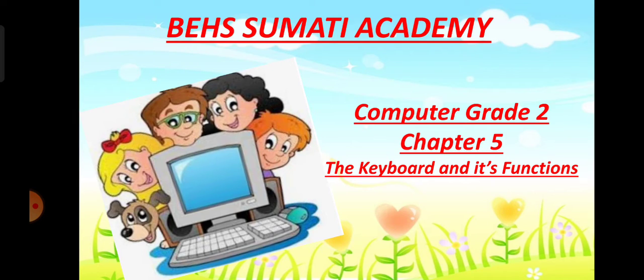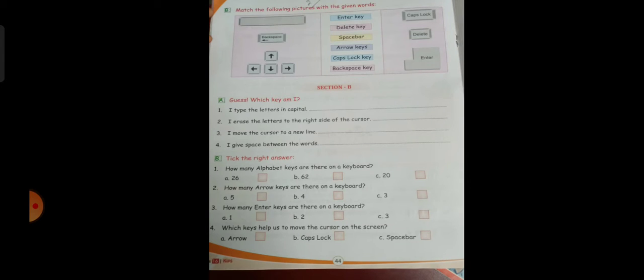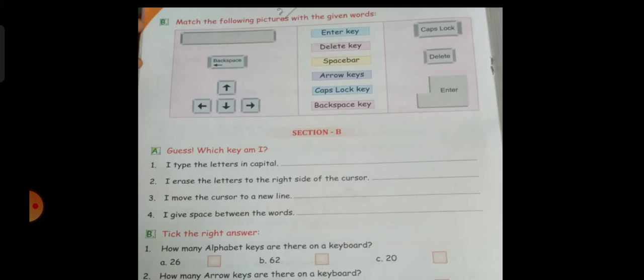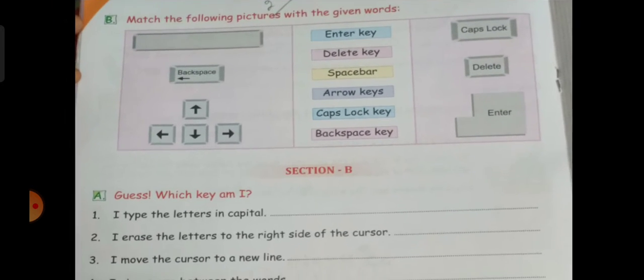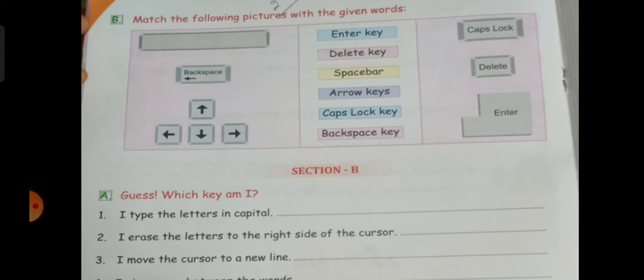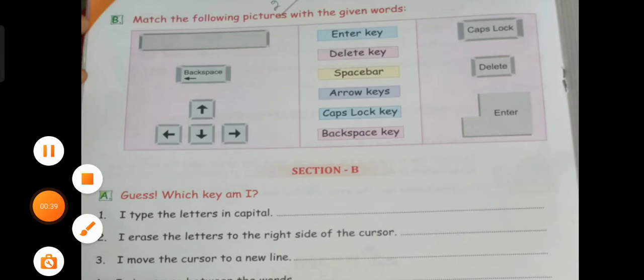Today we will do the remaining part of the exercise. First, we have the matching part. You can see different shapes of keys are given. You have to match the correct picture with the correct word.